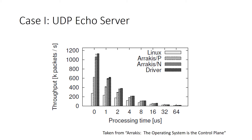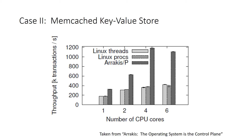For the memcached key-value store, you can clearly see that Arrakis performs quite well. They only used the POSIX flavor here and compared against Linux threads and straight Linux processes. Not only does Arrakis perform better, but it also scales better than Linux, which is really cool. They do have a bit of a hit when they go to six cores, which has to do with the fact that they use a base operating system called Barrelfish, which causes some overhead.